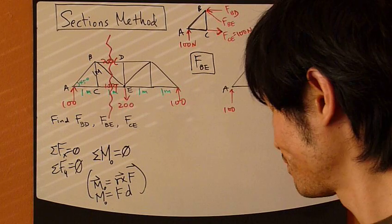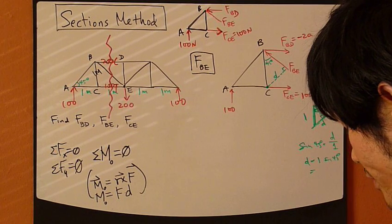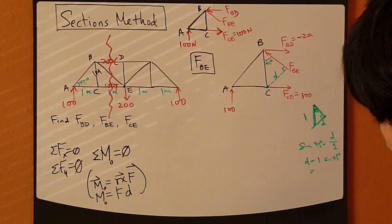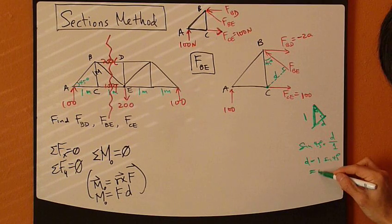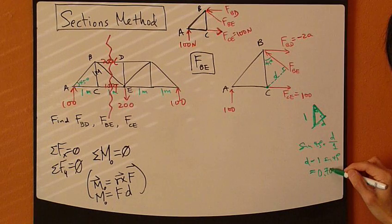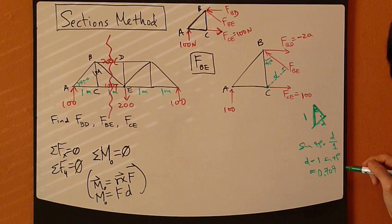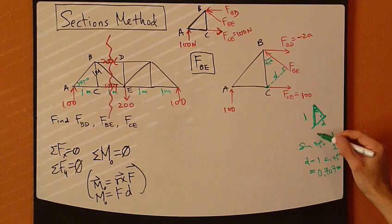That's square root of 2 over 2, which is 0.707 meters. That's good enough. That's the distance D.